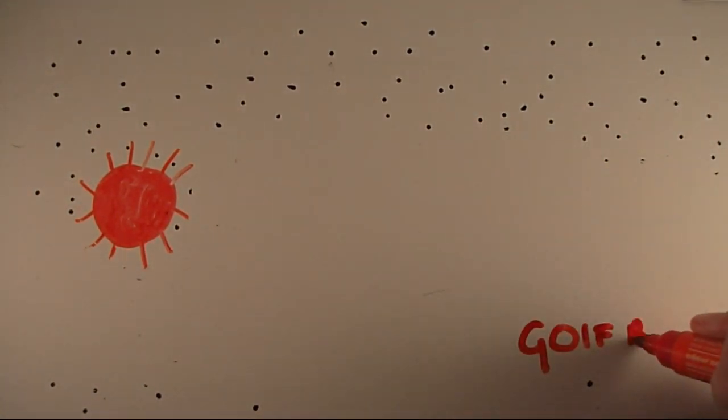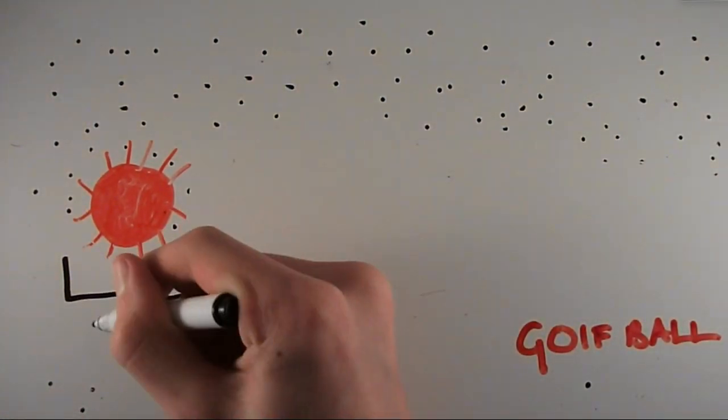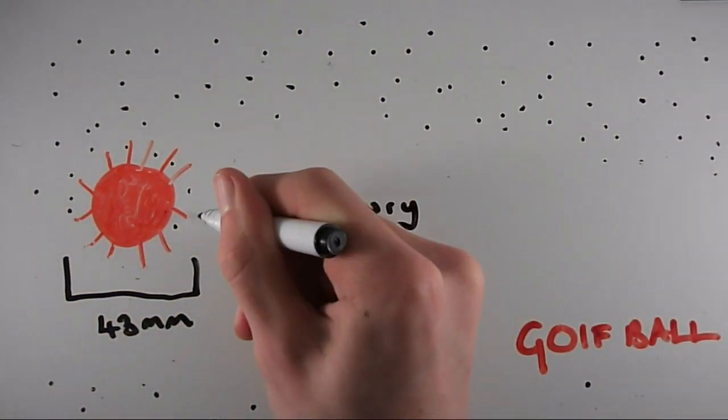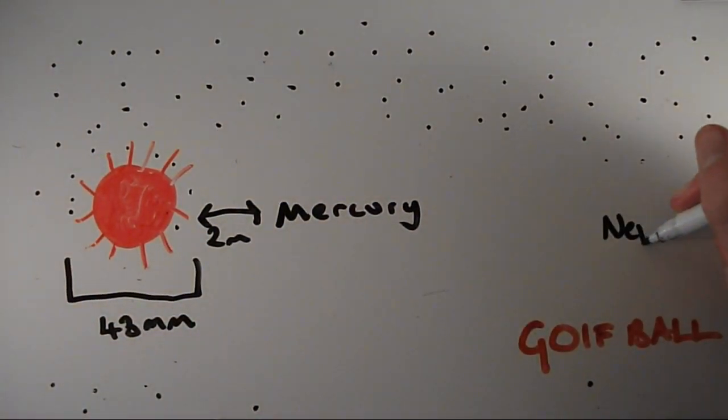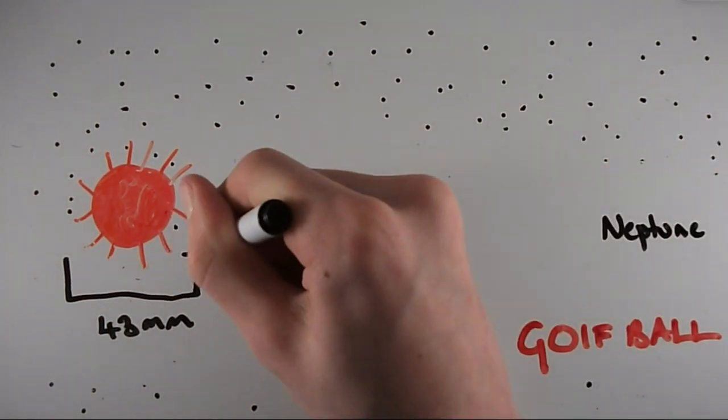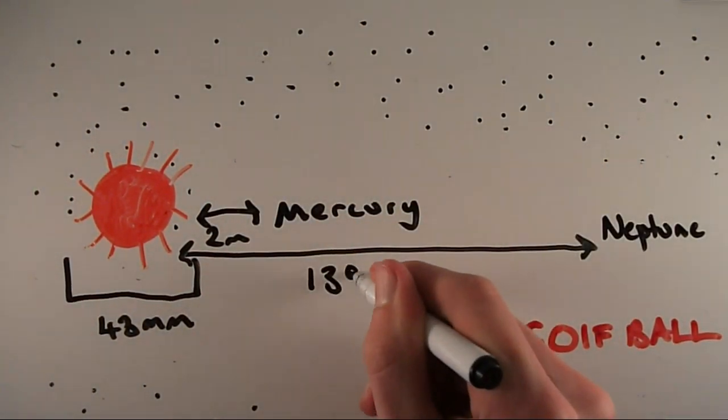Let's downgrade the sun to a golf ball with a diameter of 43 millimeters. The closest planet is still quite far away. Mercury would be just under 2 meters away and Neptune would still be very far away at 139 meters.